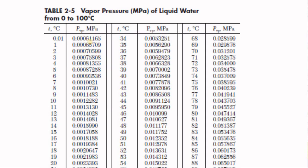This table shows the vapor pressure of water at different temperatures. For example, at 100 degrees C, the vapor pressure is 1 atmospheric. At 75 degrees C, you can see it is a lower pressure.